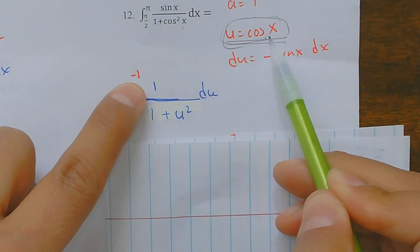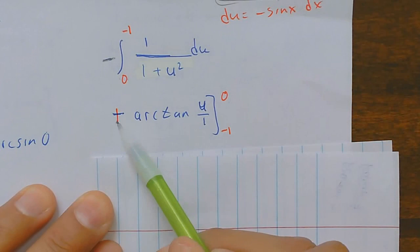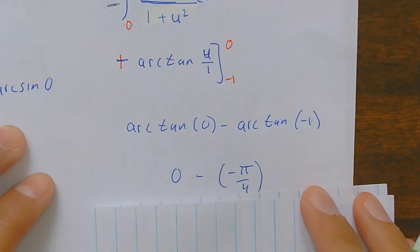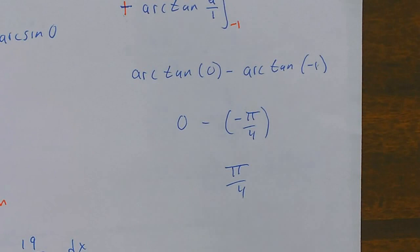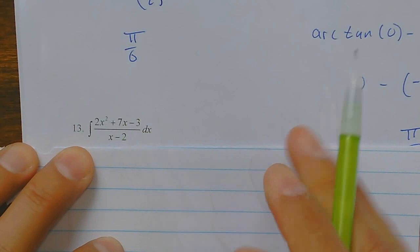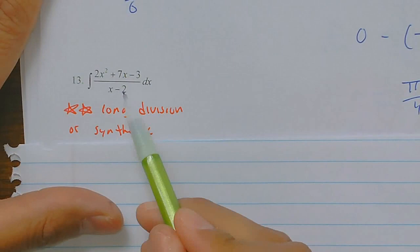Number thirteen: if the degree of the numerator is greater than the degree of the denominator, you must divide it out — using long division or synthetic division. Because I have x minus 2, I use synthetic division and rewrite it as 2x plus 11 plus 19 over (x minus 2). Then I integrate piece by piece: x squared gives 11x, and the fraction becomes a natural log term.